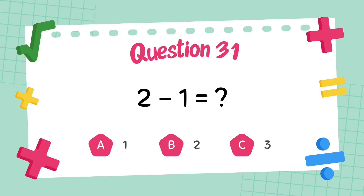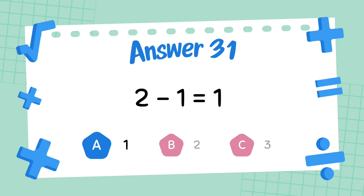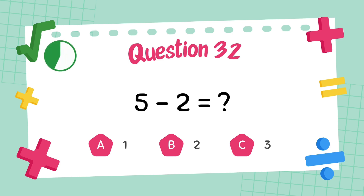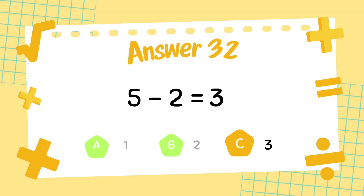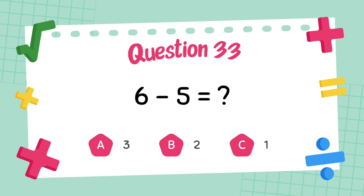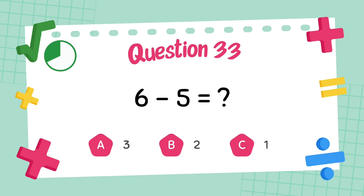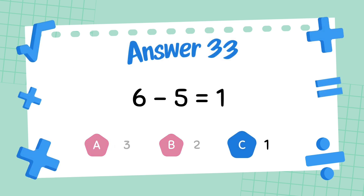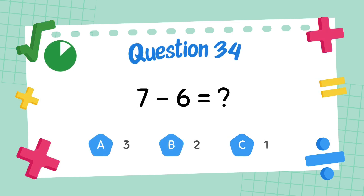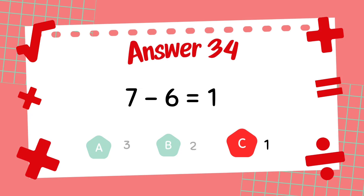What is 2 minus 1? The answer is 1. What is 5 minus 2? The answer is 3. What is 6 minus 5? The answer is 1. What is 7 minus 6? The answer is 1.